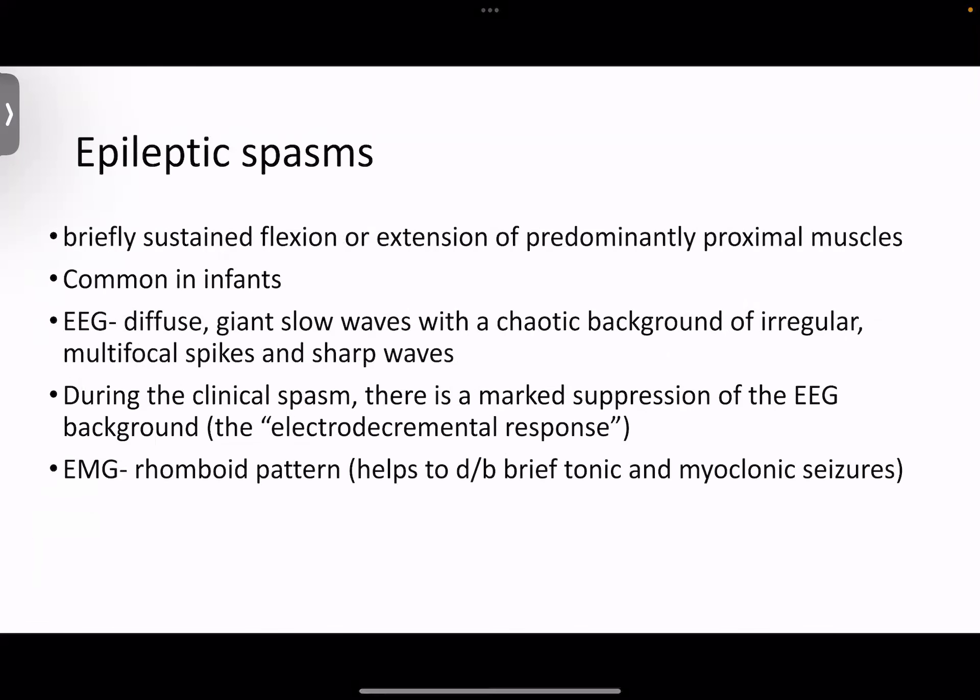Epileptic spasms are briefly sustained flexion or extension of predominantly proximal muscles and are common in infants. The EEG can show diffuse giant slow waves with a chaotic background of irregular multifocal spikes and sharp waves. During the clinical spasm, there is marked suppression of the EEG background — called the electrodecremental response. EMG can show a rhomboid pattern and helps differentiate between brief tonic and myoclonic seizures.